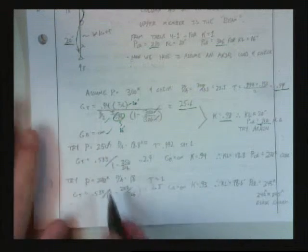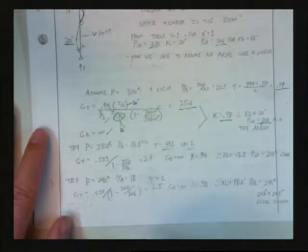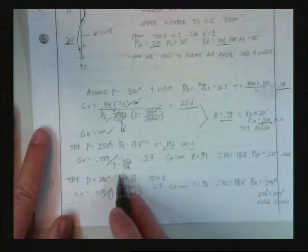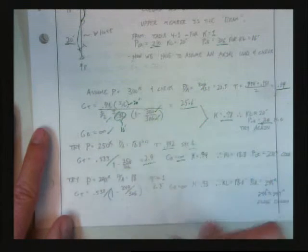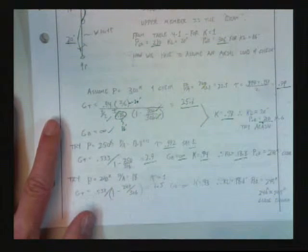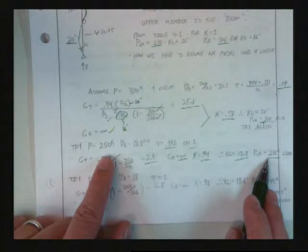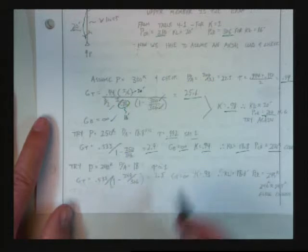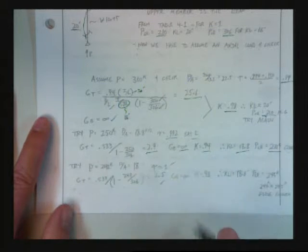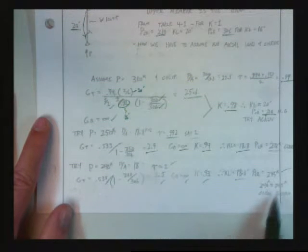So, what do I do? Swim again. So, now I pick 250. Do everything again. I get a tau of 0.992. I'm just going to say that's 1. It's pretty close. So, I plug in here. You can check this for yourself. You get a G top of 2.9. A G bottom of infinity. K of 0.94. A KL of 18.8. A P critical is 233. Pretty close, isn't it? So, now I'm going to assume another one. 240. Do everything again. Tau is 1. 2.5. K of 0.93. KL of 18.6. 245. 240 is pretty close to 245.